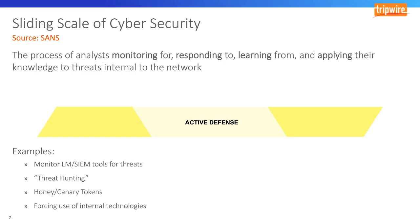There are a lot of different maturity models within the active defense phase. At the beginning, you may detect a piece of malware on an endpoint and wipe the machine. More mature organizations will also hunt for the existence of that malware elsewhere on the network. At the pinnacle of this maturity, you may want to leave the malware in place and monitor what it's doing — is it stealing from a database, communicating with other machines, or talking to hosts on the Internet?